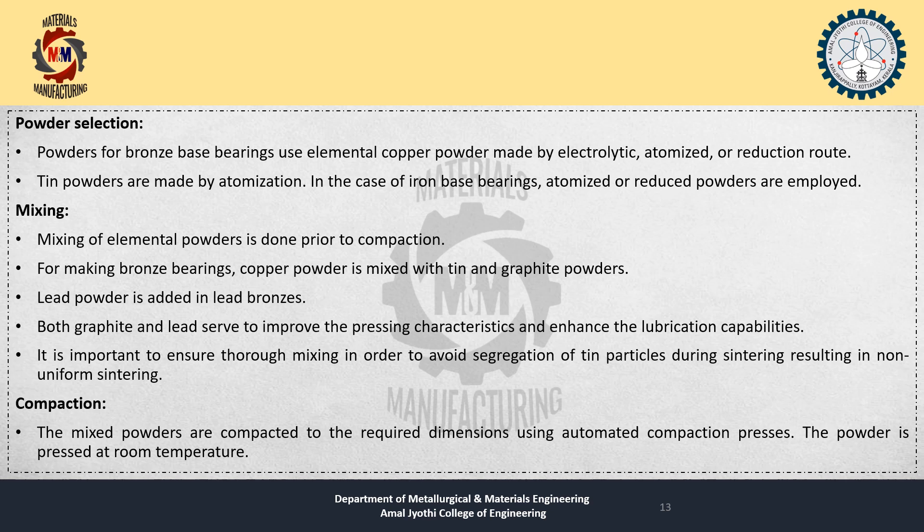Mixing: Mixing of elemental powders is done prior to compaction. For making bronze bearings, copper powder is mixed with tin and graphite powders. Lead powder is added in lead bronze. Both graphite and lead serve to improve the pressing characteristics and enhance the lubrication capabilities. It is important to ensure thorough mixing in order to avoid segregation of tin particles during sintering, resulting in non-uniform sintering.